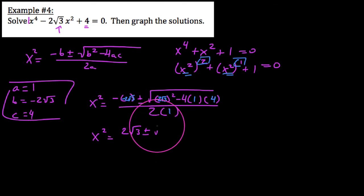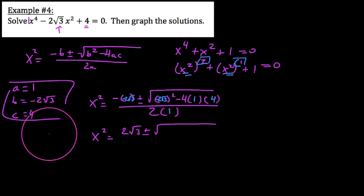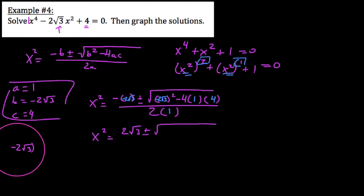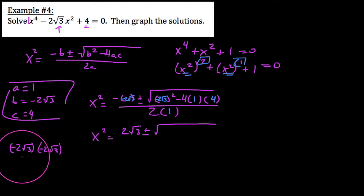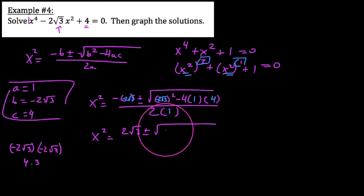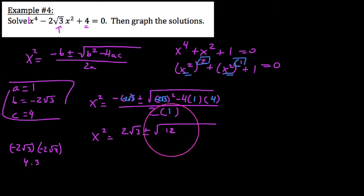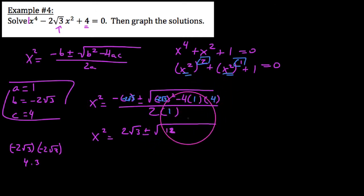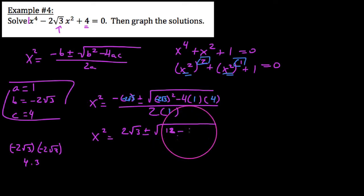Plus or minus, we get the square root of negative 2√3 all squared, which would be negative 2 times negative 2 is 4, and root 3 times root 3 is 3 — so we get 12. And then 4 times 1 times 4 is 16, and a negative times a positive times a positive is a negative. So I get negative — meaning we're going to get a negative value inside the radicand.